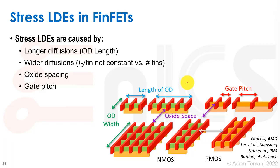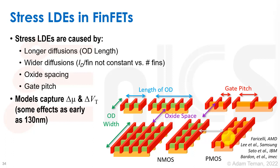So what are stress LDEs in FinFETs? They're caused by many things: longer diffusions (the OD length), wider diffusions, spacing between the oxides, gate pitches, and differences between NMOS and PMOS and the distances between them. All of these cause differences in stress, and models have captured the changes in mobility and VT of the transistors due to these distances — as early as 130 nanometers — but they're taken into account a lot more in newer process models.